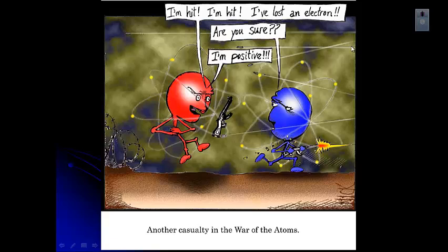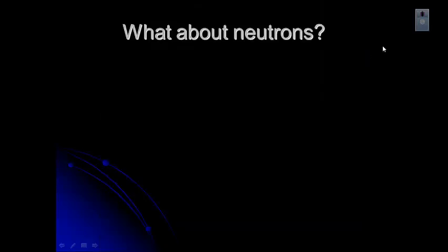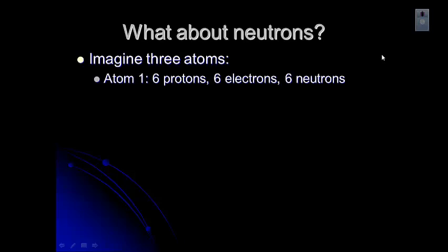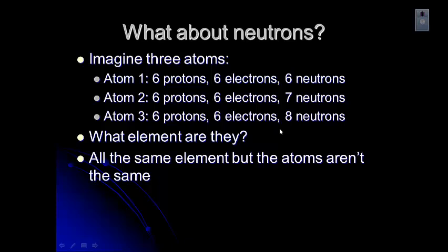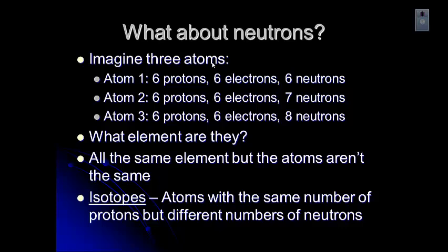Let's talk about neutrons now. We've dealt with protons and electrons. Imagine three atoms. One, two, three. As you can see, they all have the same number of protons, the same number of electrons, but they have different numbers of neutrons. First of all, think about what element this is. Hopefully you recognize that with six protons, this is carbon. They're all the same element, but the atoms are different. When that happens, we call the different elements isotopes. Those are atoms that have the same number of protons, but different numbers of neutrons.